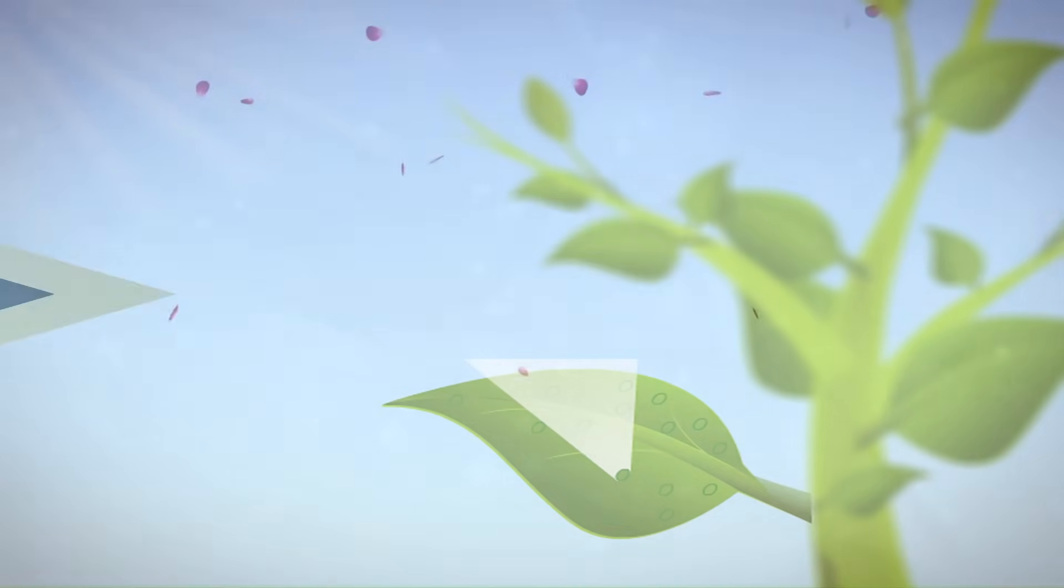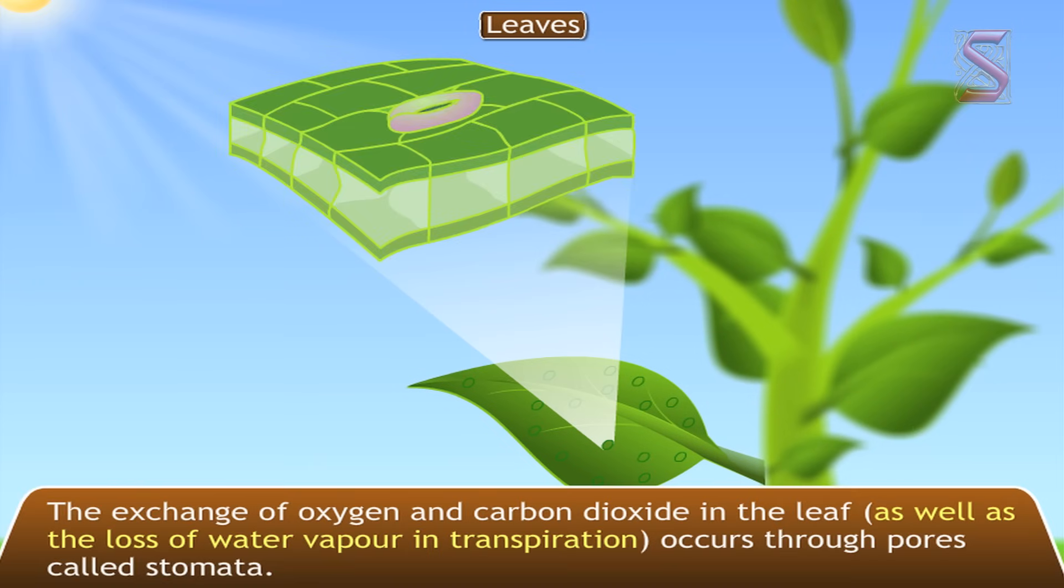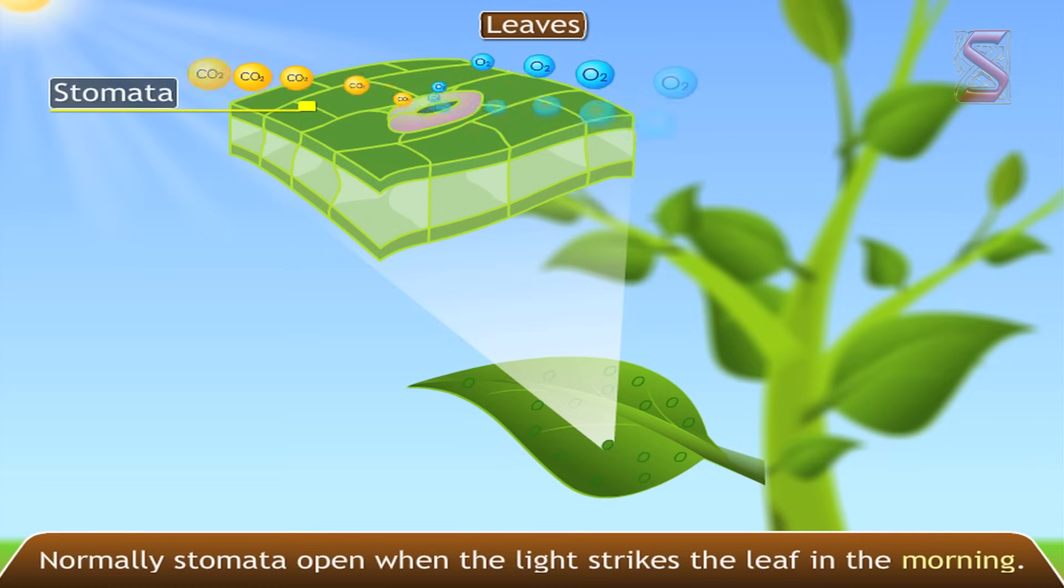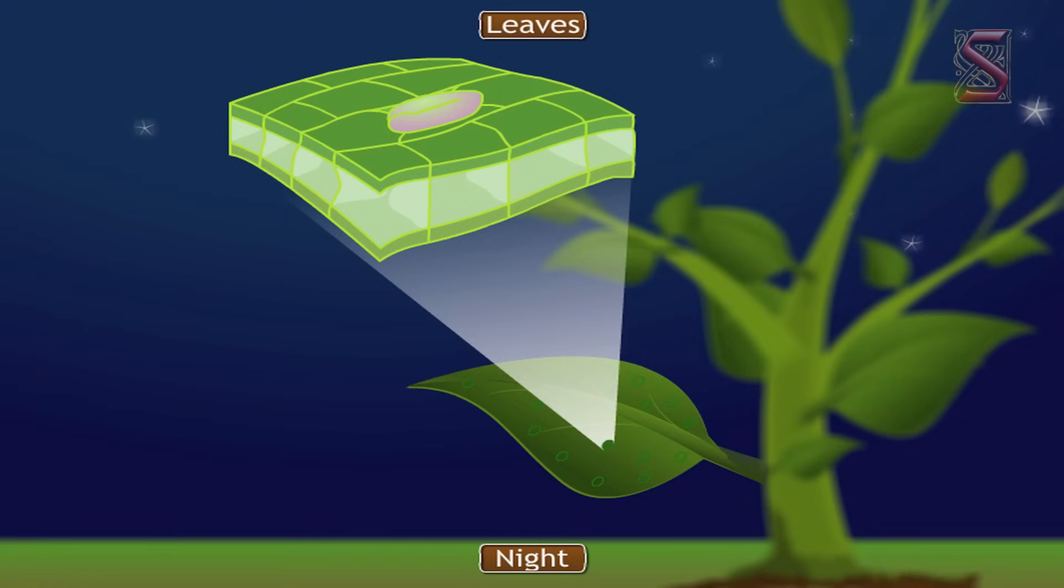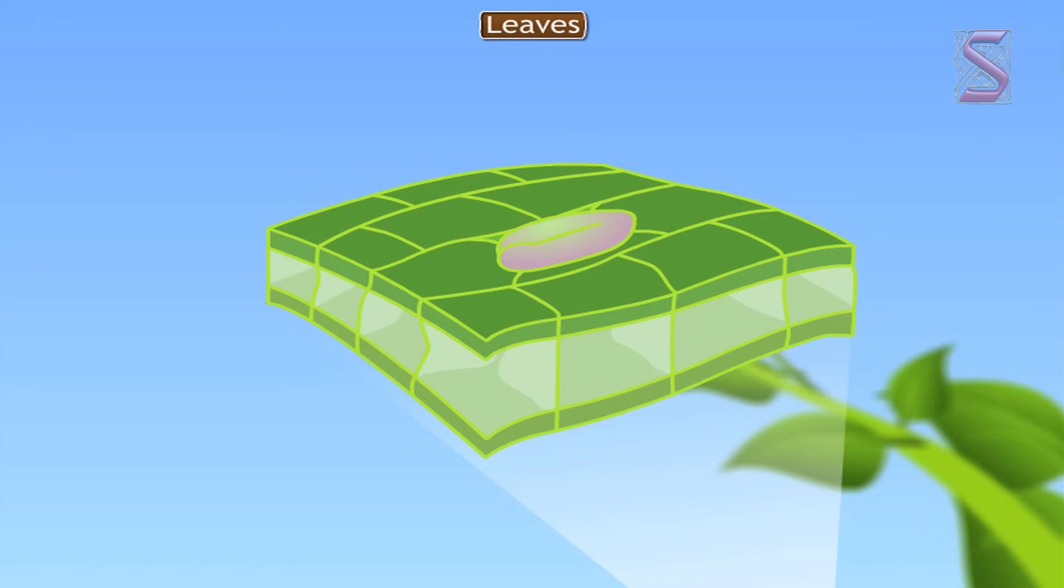The exchange of oxygen and carbon dioxide in the leaf occurs through pores called stomata. Normally stomata open when the light strikes the leaf in the morning and close during the night. The immediate cause is a change in the pressure gradient or the turgor of the guard cells.